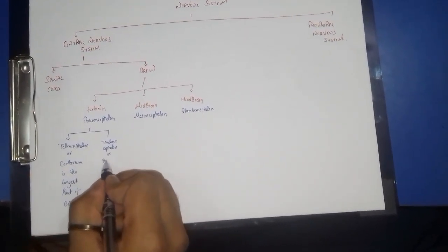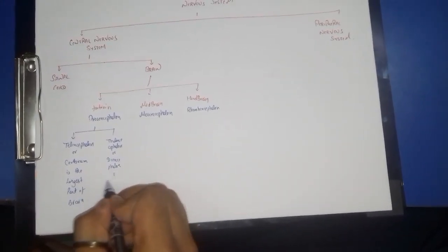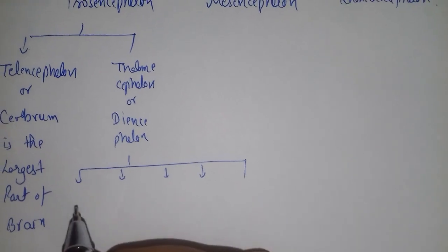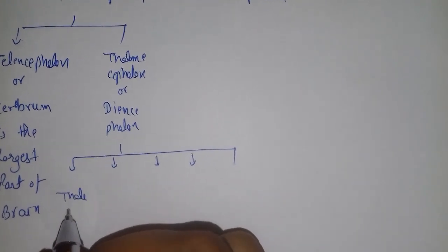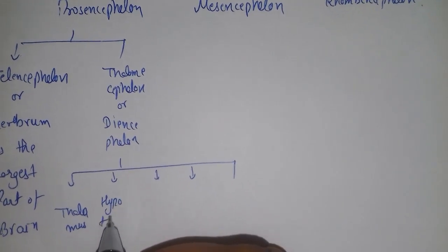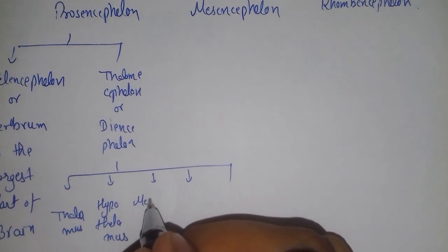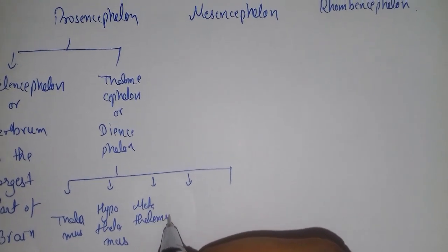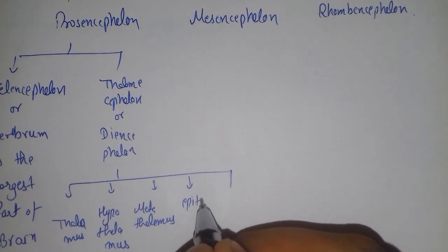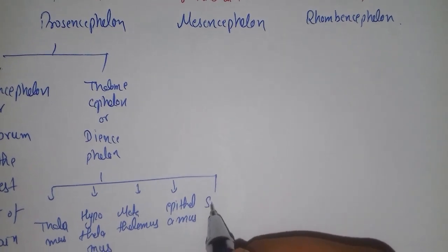Whereas the thalamencephalon, or diencephalon, can be further divided into five parts: the thalamus, the hypothalamus, the metathalamus, the epithalamus, and the subthalamus.